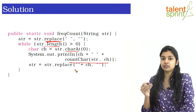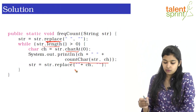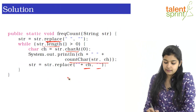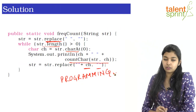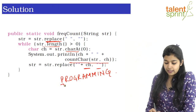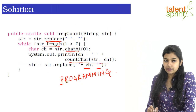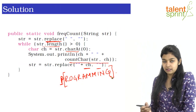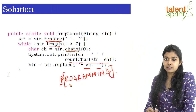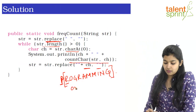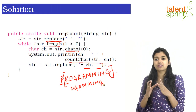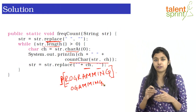Once you have checked for a particular character you don't need to check for it again. So you replace that character in your string with nothing. For example, with the string 'programming': in the first iteration you check for the character P, and once done you replace all occurrences of P with nothing. Then for the next iteration you do the same for R. So you are reducing your string size for traversal every time you check for a character.